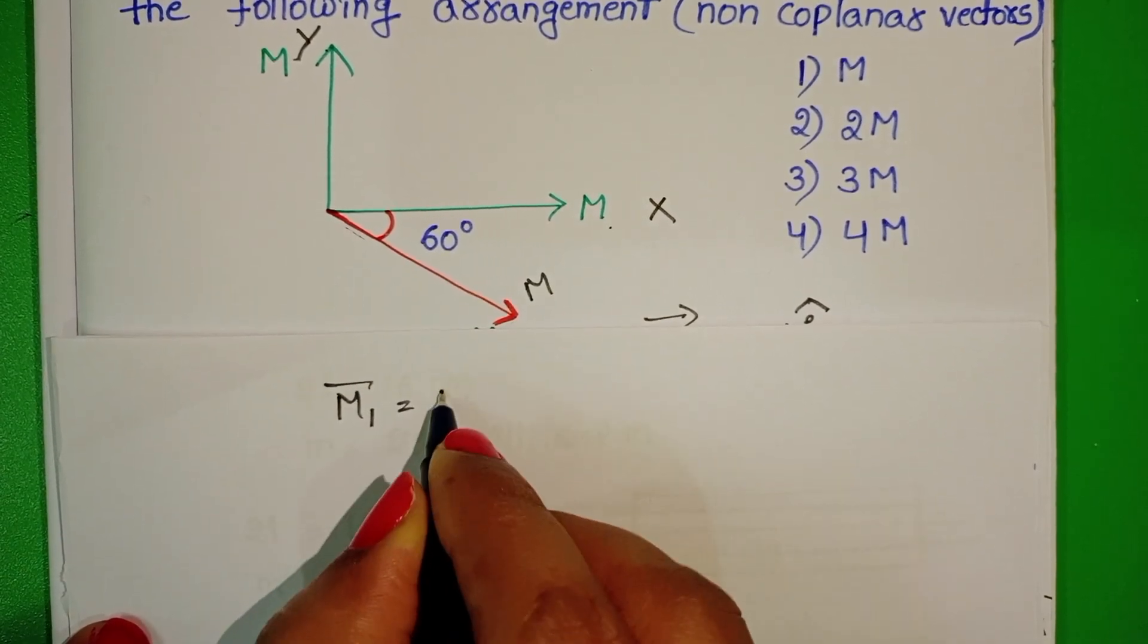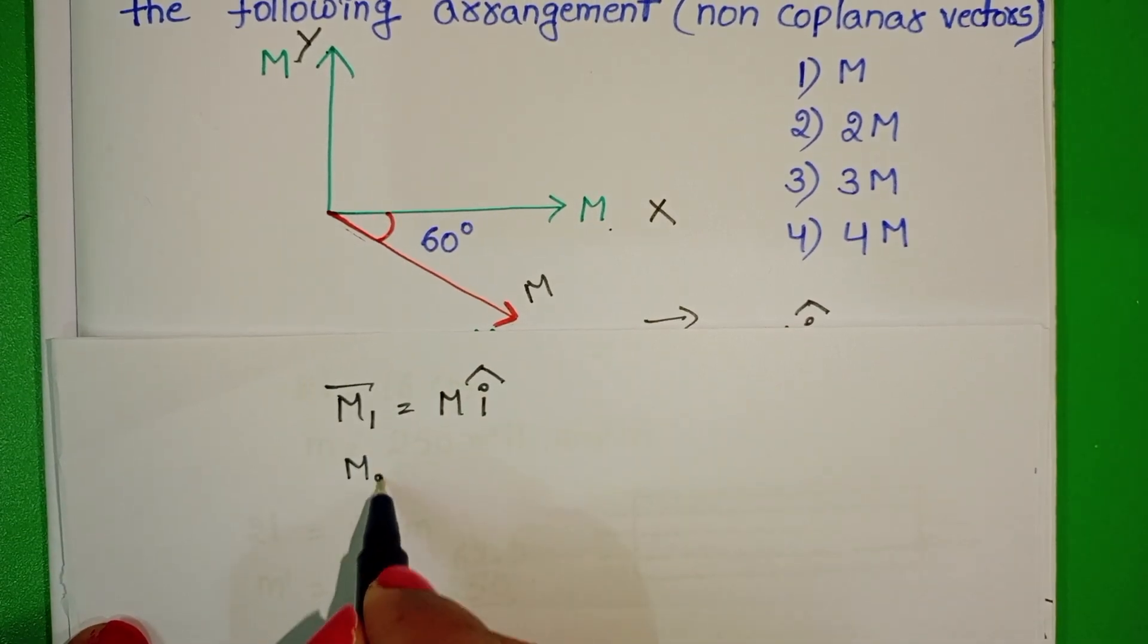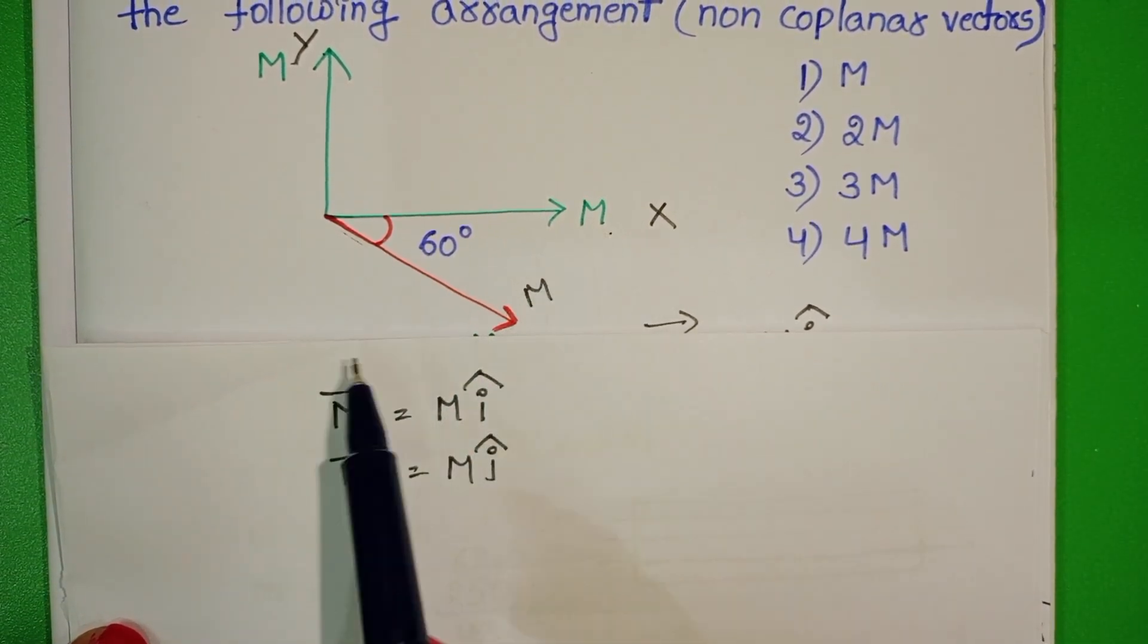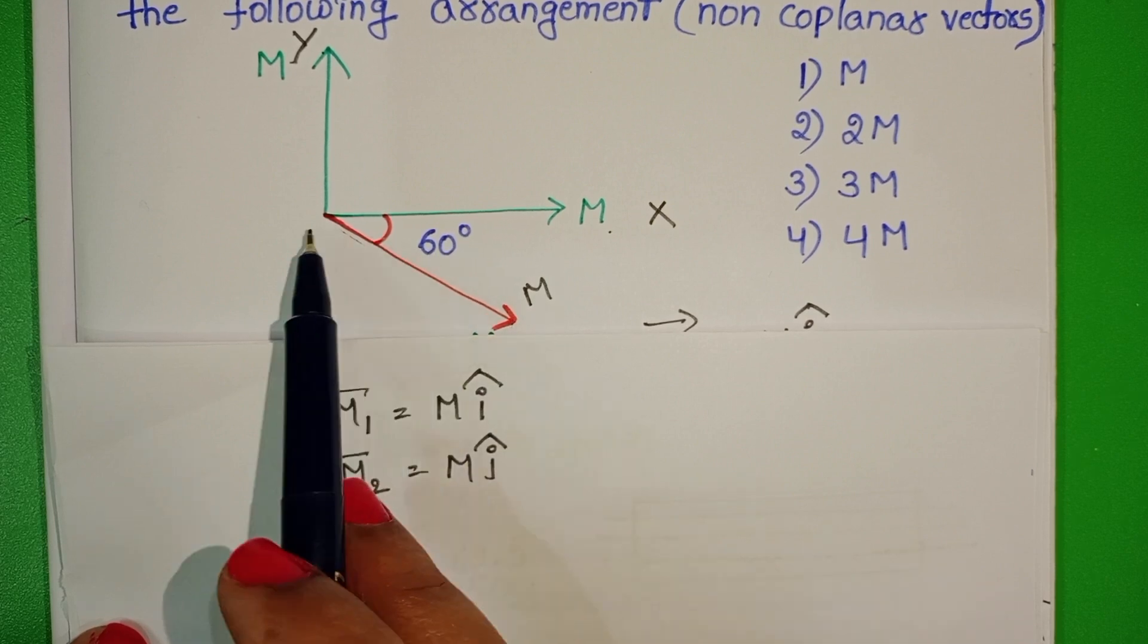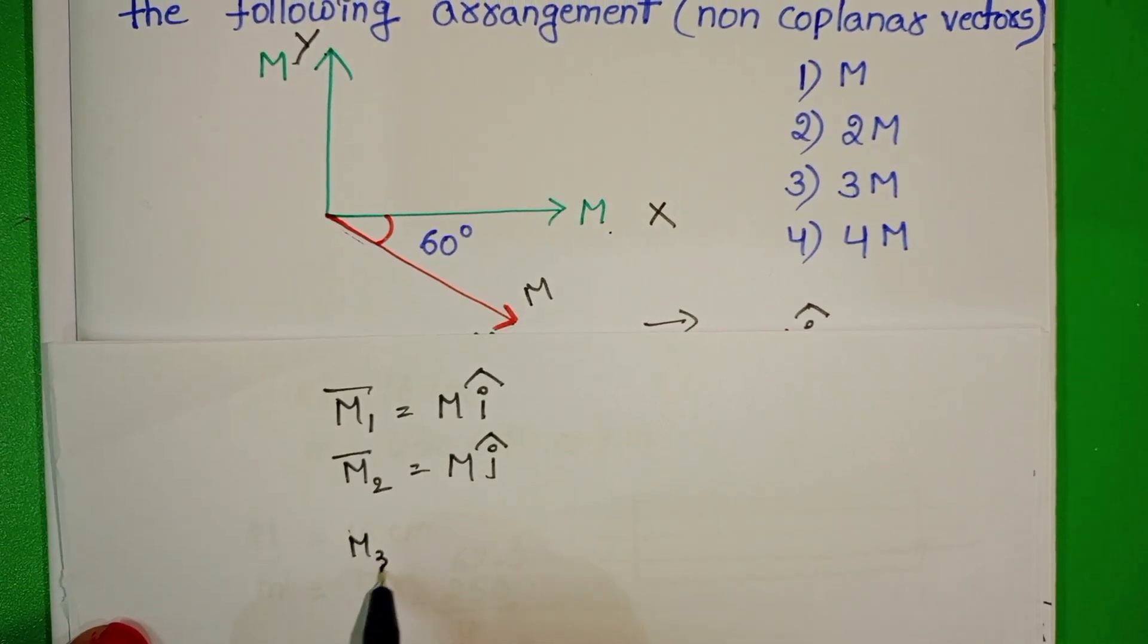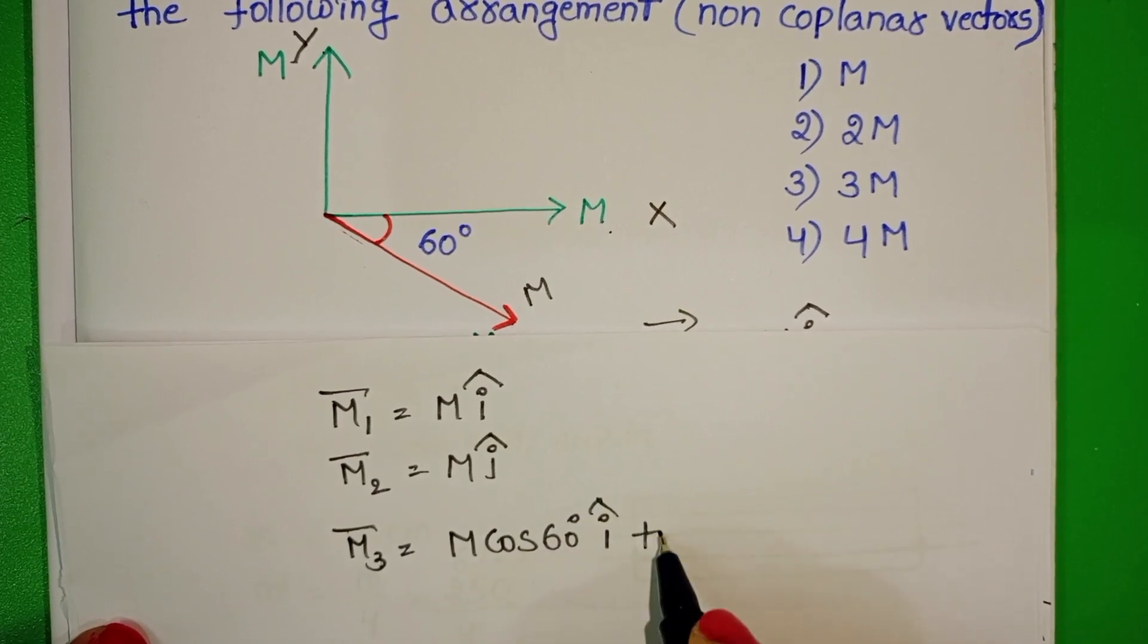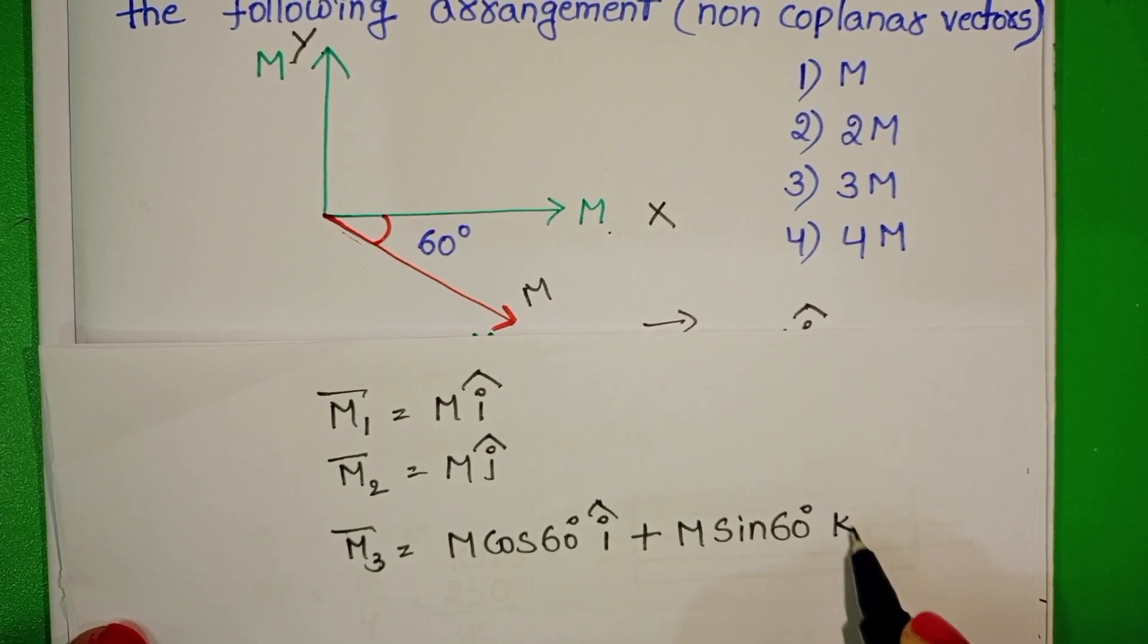M1 bar equals M i cap and second vector is along y direction, M2 bar equals M j cap. But the third vector is in the x-z plane. So this vector makes an angle 60 degrees with the x direction.